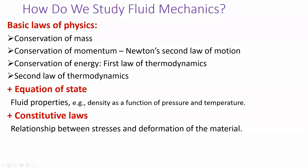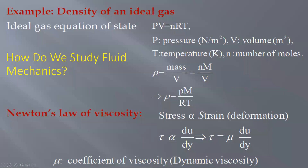Constitutive laws describe the relationship between stress and deformation of material. When you apply stress, material deforms — a football kicked forcibly deforms but regains its shape due to elasticity, while a car panel hit by a hammer deforms permanently. For an ideal gas, density is given by the ideal gas equation: PV is directly proportional to temperature, i.e., PV = nRT.